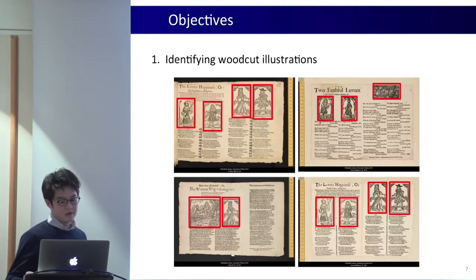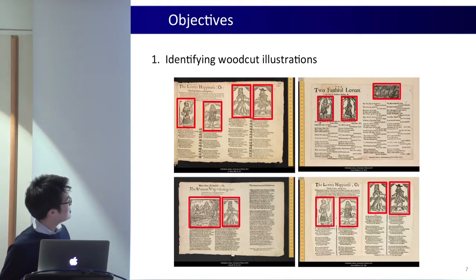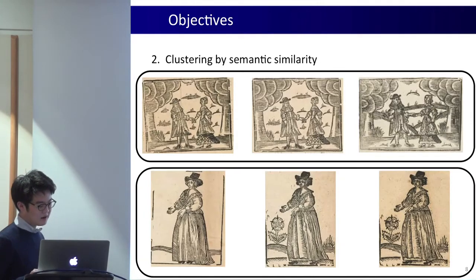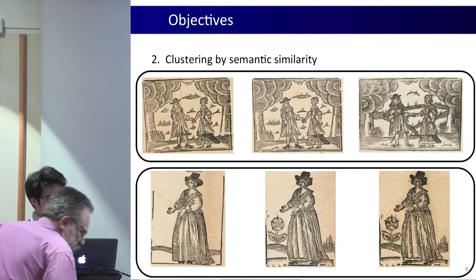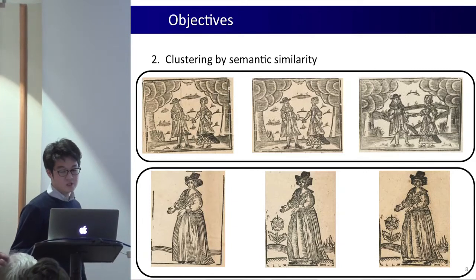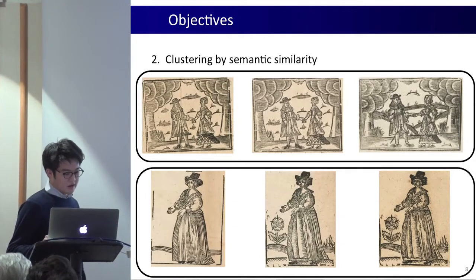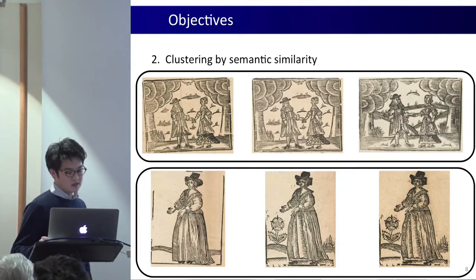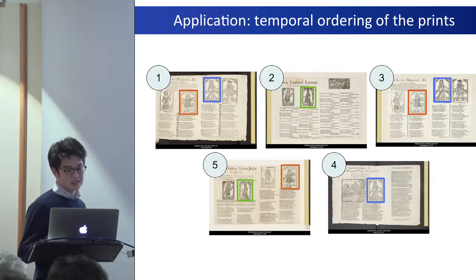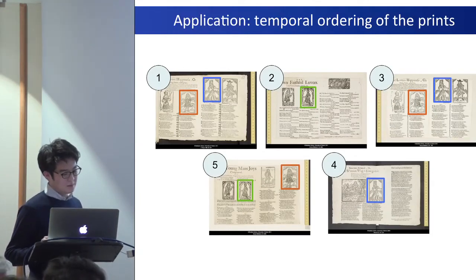We break down our problem into four key objectives. First, we identify the woodcut illustrations on the ballad sheets. Second, we cluster by semantic similarities — similar looking images but not necessarily printed from the same woodblock — which helps us see the development of visual representations. Third, we cluster by exact copies, which helps researchers identify the printer and find out more about the history of the woodblocks. Finally, we use these matches to estimate the dates on which the ballad sheets were printed.